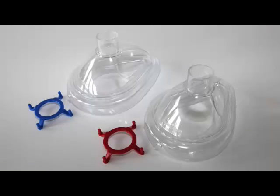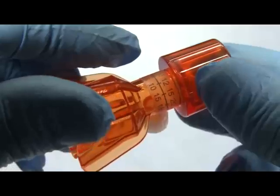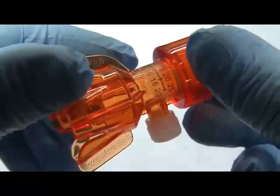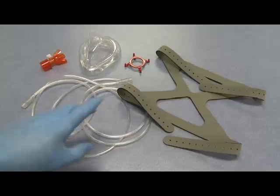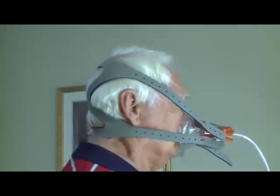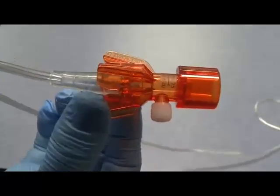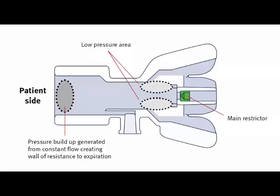A vectored flow valve with the oxygen flow pressure table displayed, oxygen tubing and a soft patient harness. The continuous positive airway pressure is created when the vectored flow valve accelerates the oxygen flow, causing turbulence at the restrictor exit.